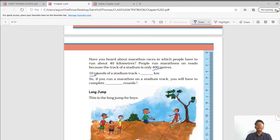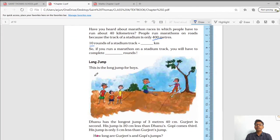Now what is asked? 10 round of stadium track equals to dash kilometers. Firstly, we will multiply 400 into 10 for making it 10 rounds. You will get 4000 meter. When you will multiply 400 meters into 10, you will get 4000 meters. And converting that meter into kilometer, we need to divide it by 1000. When you divide 4000 by 1000, you will get 4 kilometers.